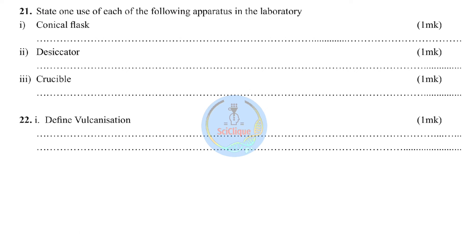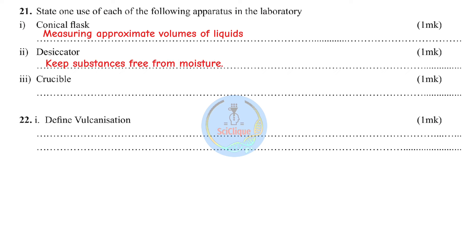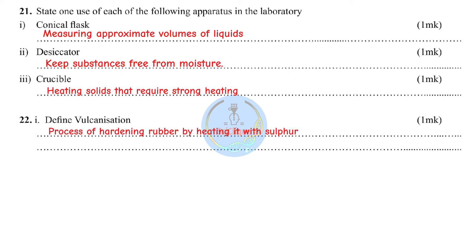Question twenty: state one use of each apparatus. Conical flask — measuring approximate volumes. Desiccator — keeping substances free from moisture. Crucible — heating solids that require very strong heating. Question twenty-two: define vulcanization — the process of hardening rubber by heating it with sulfur. Its importance: it improves the quality of rubber, making it tougher and less flexible.